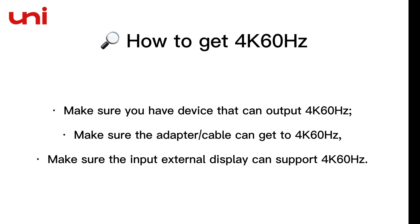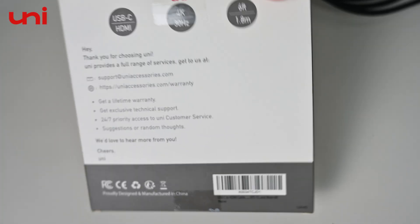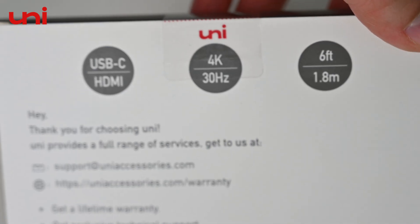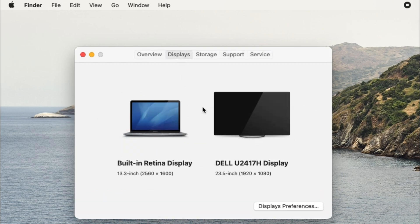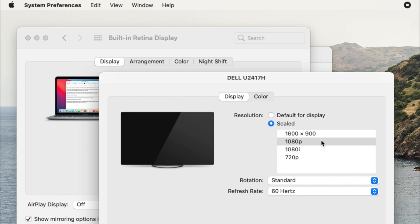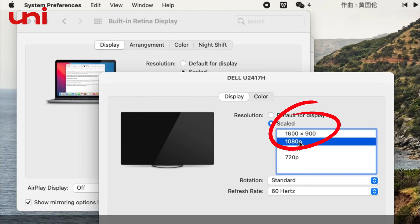Problems with specifications: from devices to accessories to monitors, if the ideal resolution is not achieved, we need to troubleshoot the resolution of all linked devices. For example, when you choose Uni's 4K USB-C to HDMI cable but the actual result is not obtained, it is possible that your device does not support it, or the video source is not originally 4K 60Hz.